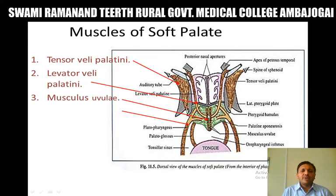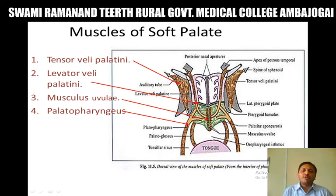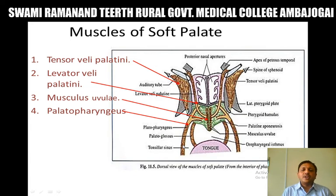The next muscle is the palatopharyngeus muscle. Its origin is via two slips: an anterior slip attached to the posterior border of the hard palate, and a posterior slip attached to the palatine aponeurosis. This muscle passes downwards and medially, and it forms the longitudinal muscle coat internal to the superior constrictor muscle of the pharynx. Finally, the palatopharyngeus muscle inserts on the posterior border of the thyroid cartilage.